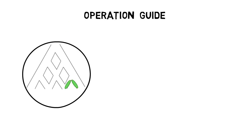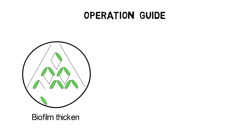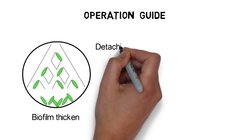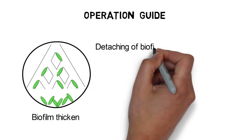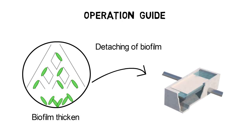In time, the biofilm thickens and detaches into the liquid flow, forming the secondary sludge. Trickling filters are normally followed by a clarifier or sedimentation tank. The sludge collected is treated for reuse or prior to disposal.